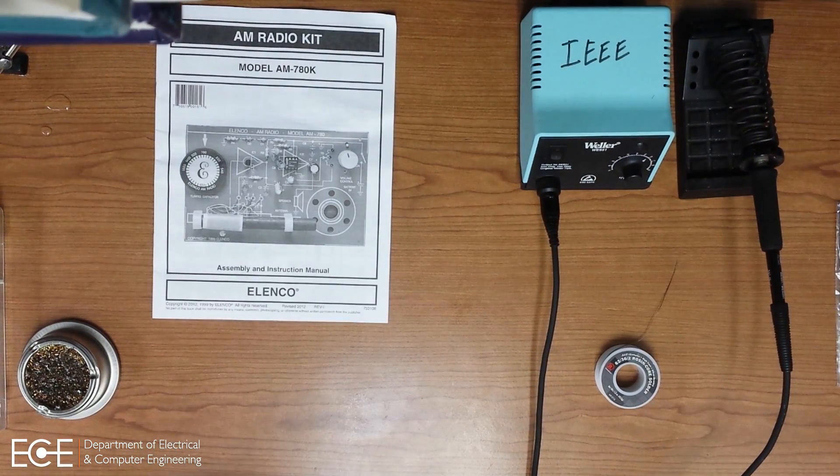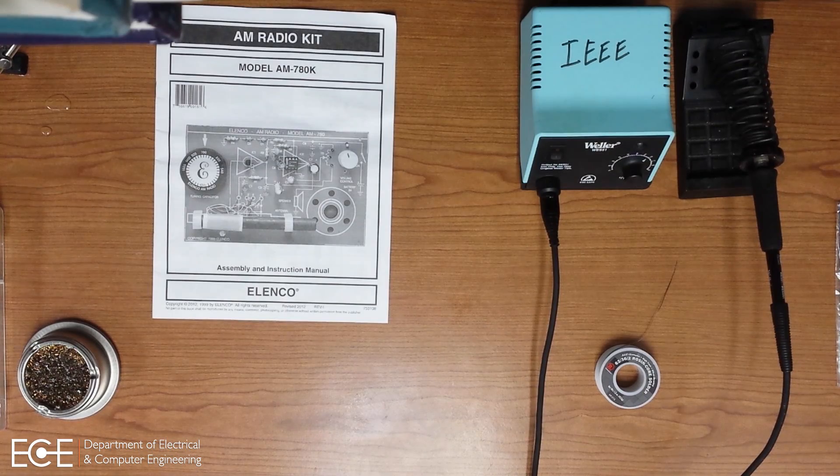Your AM radio kit comes in a bag. It consists of a PCB, components, and a manual.